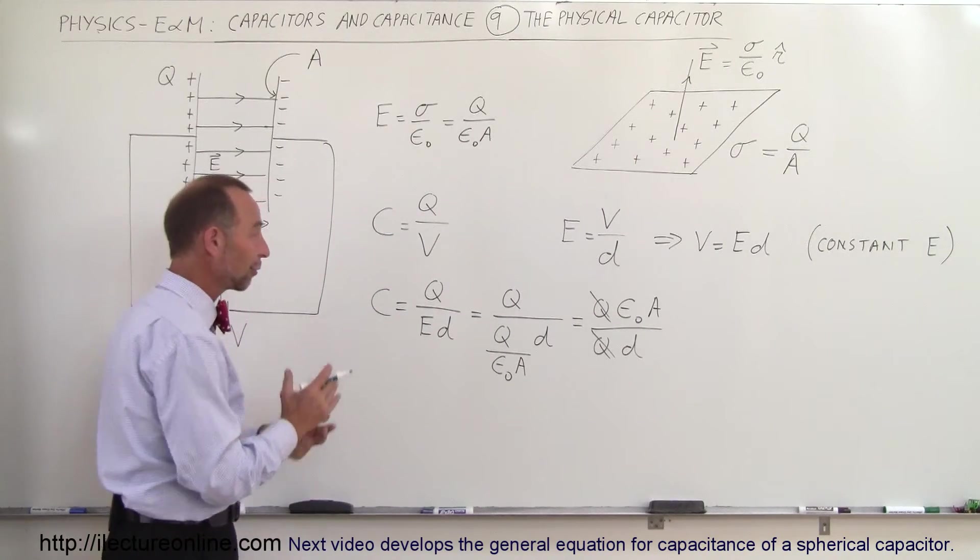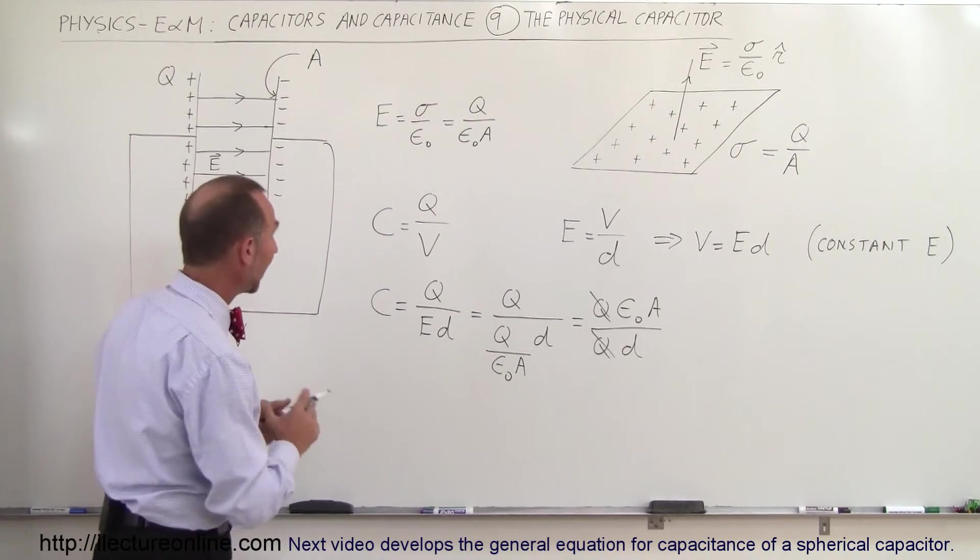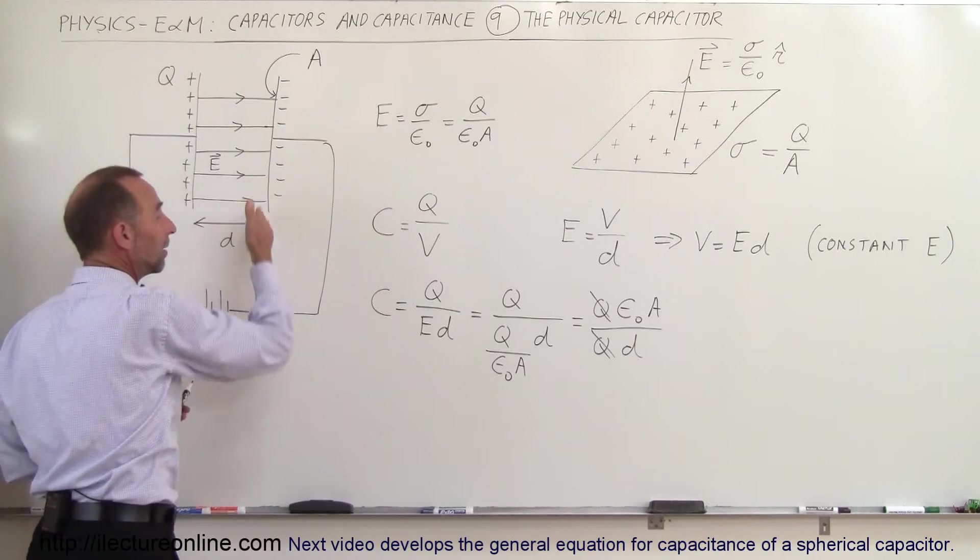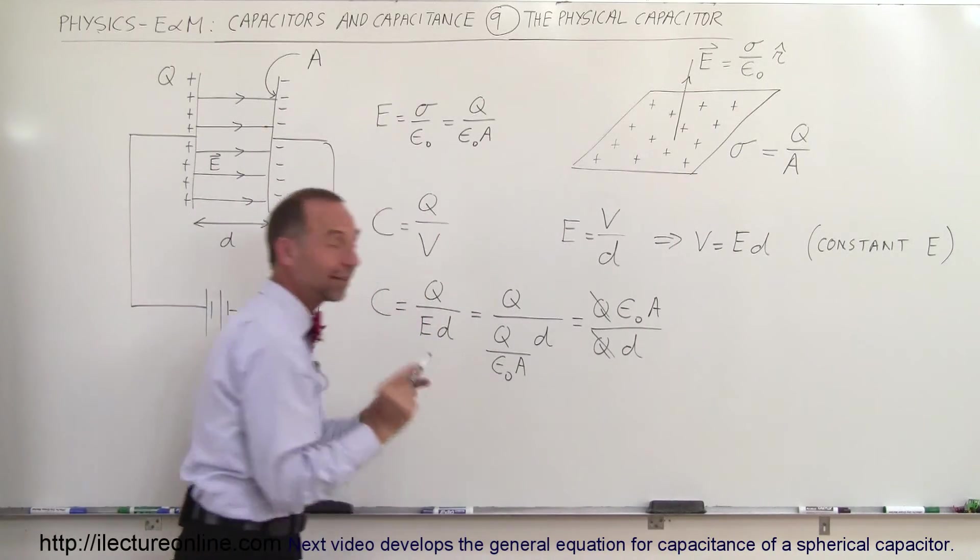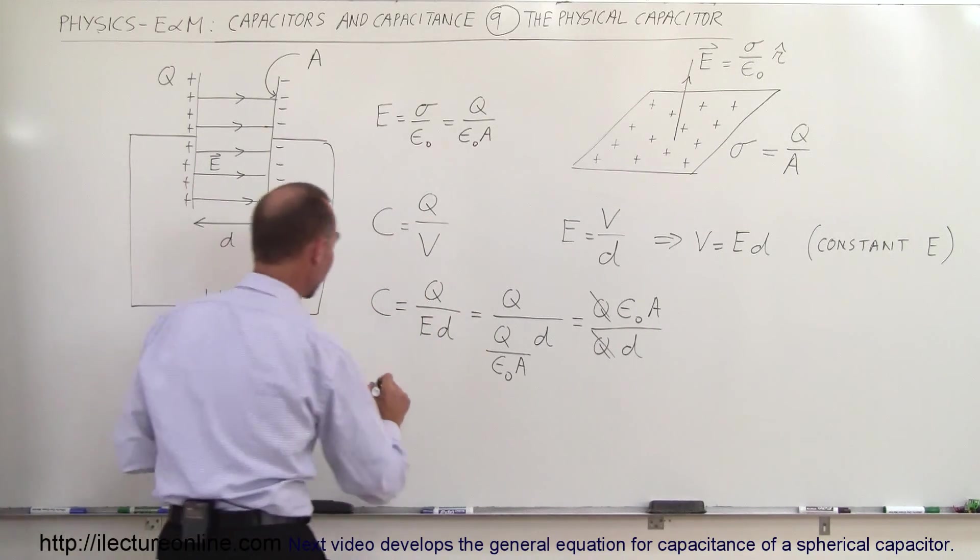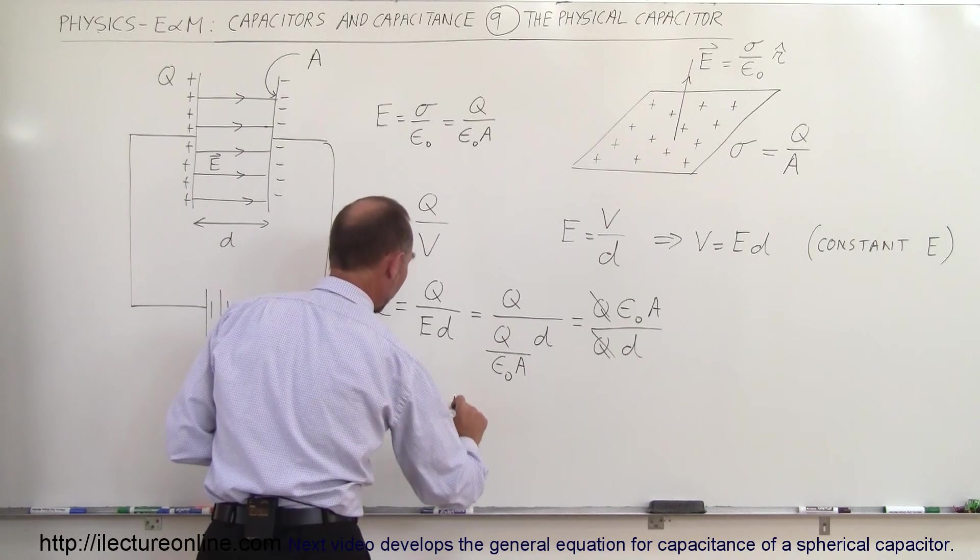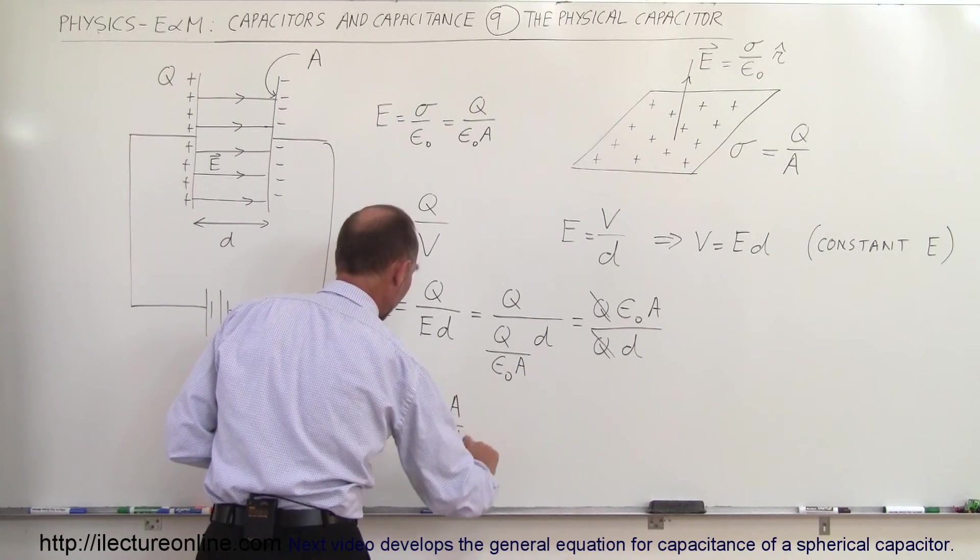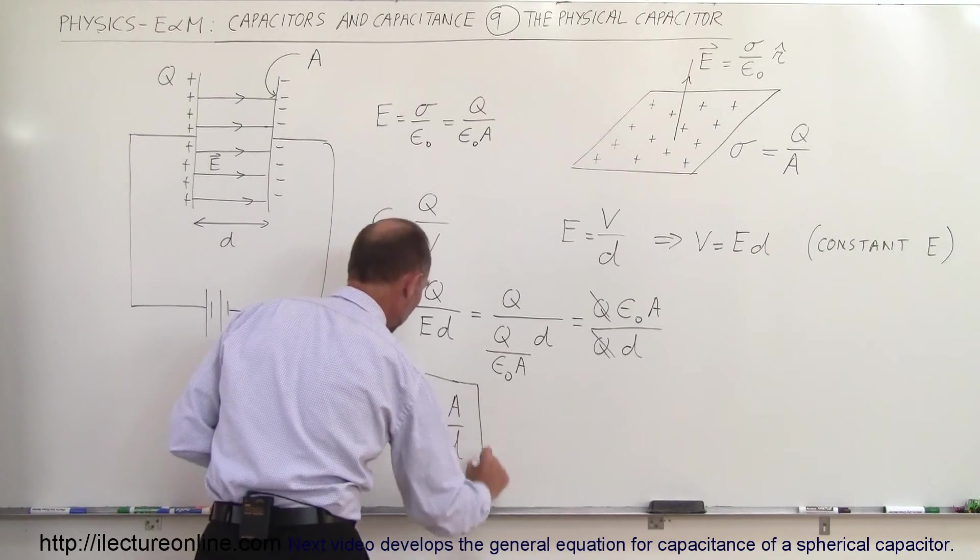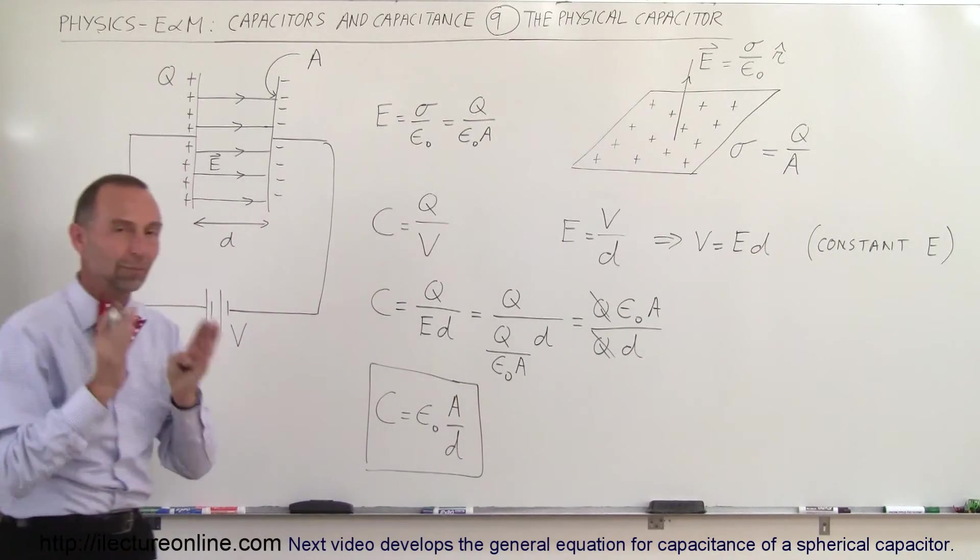And so finally we can see that for a physical capacitor that has surface area A on the plates and where the plates are separated by distance D between them, we can then say that the capacitance is equal to epsilon sub-naught times the ratio of the area of the plates divided by the distance between them.